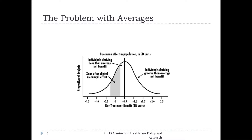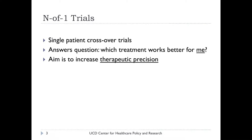There are a number of solutions in development to this general problem, but one is called n-of-one trials — clinical experiments designed for the individual patient. They are simply crossover experiments where a patient is switched back and forth between treatments in some kind of balanced, standardized, or randomized way.